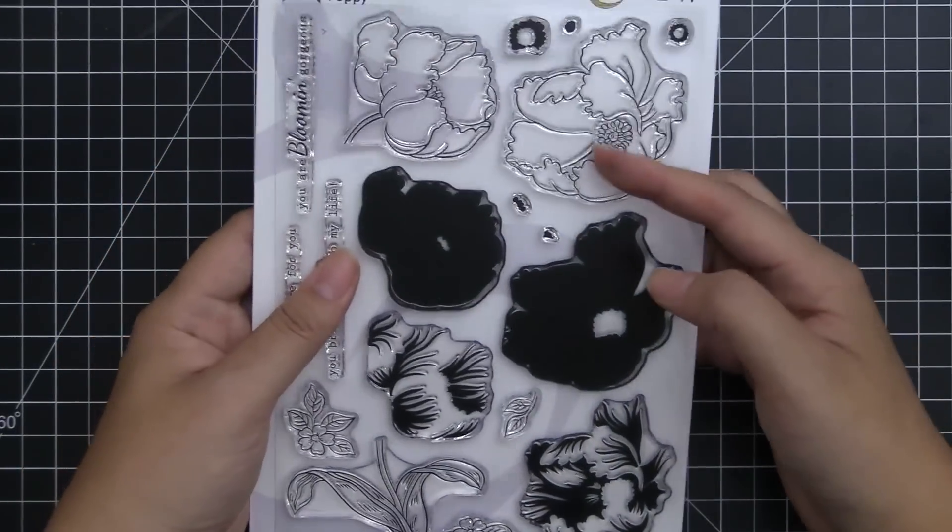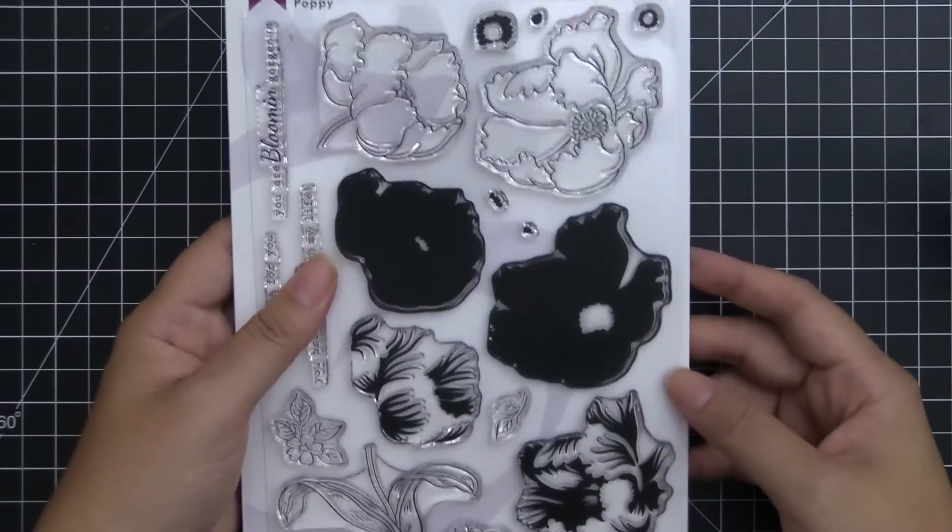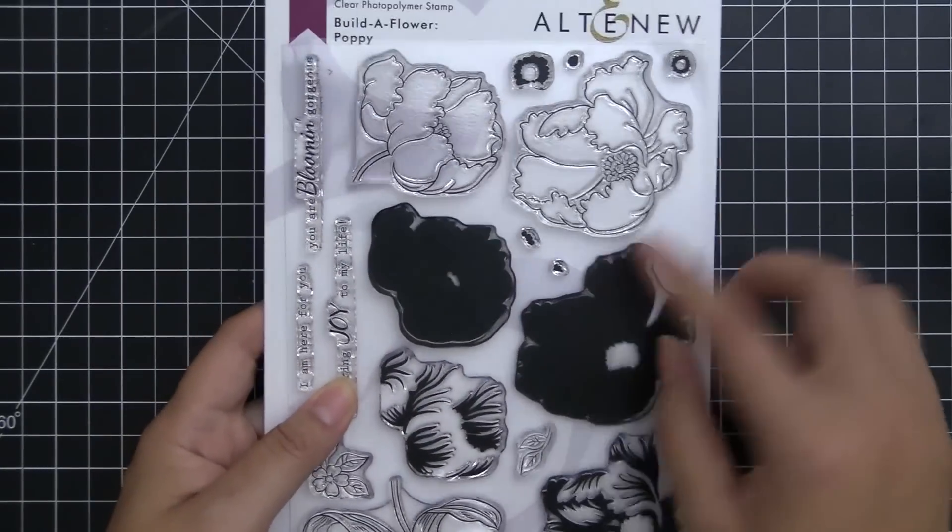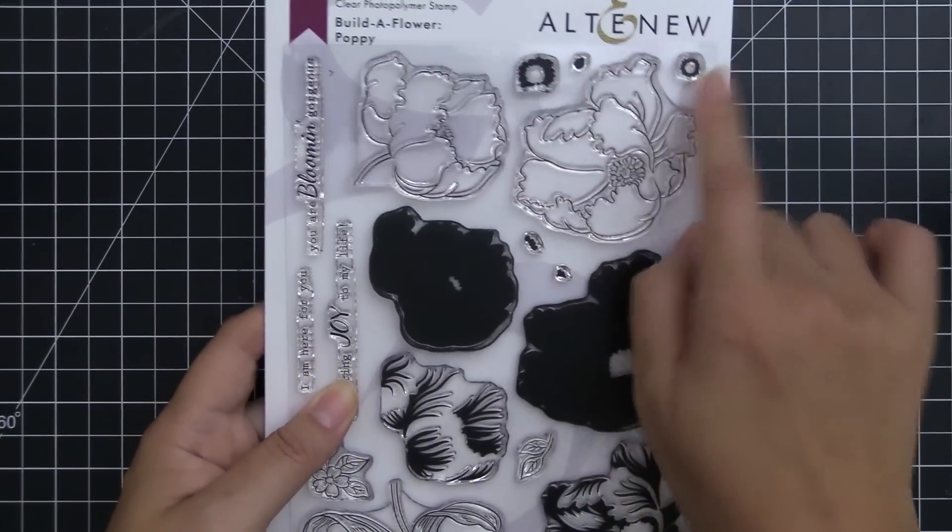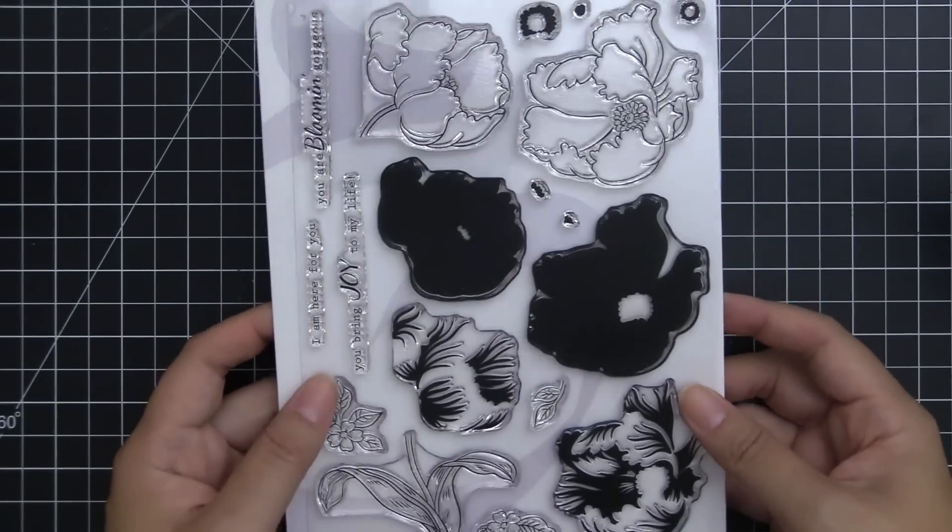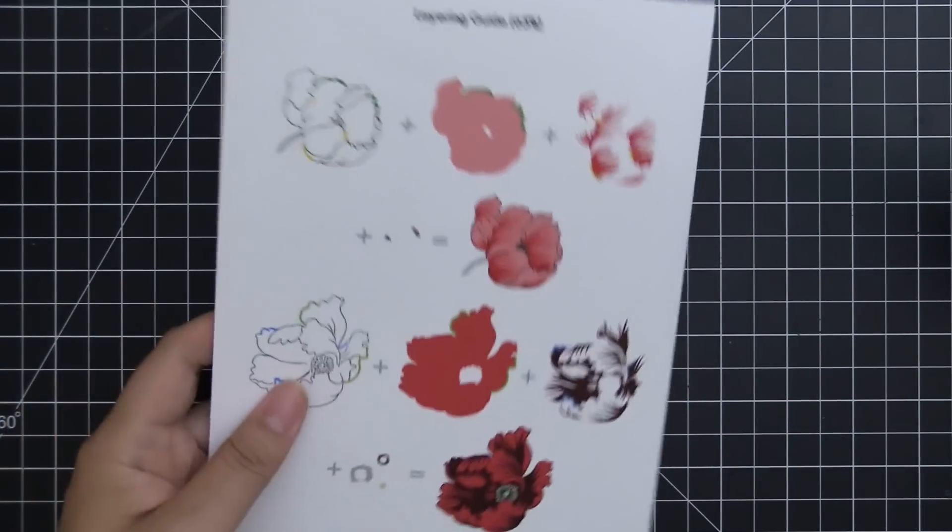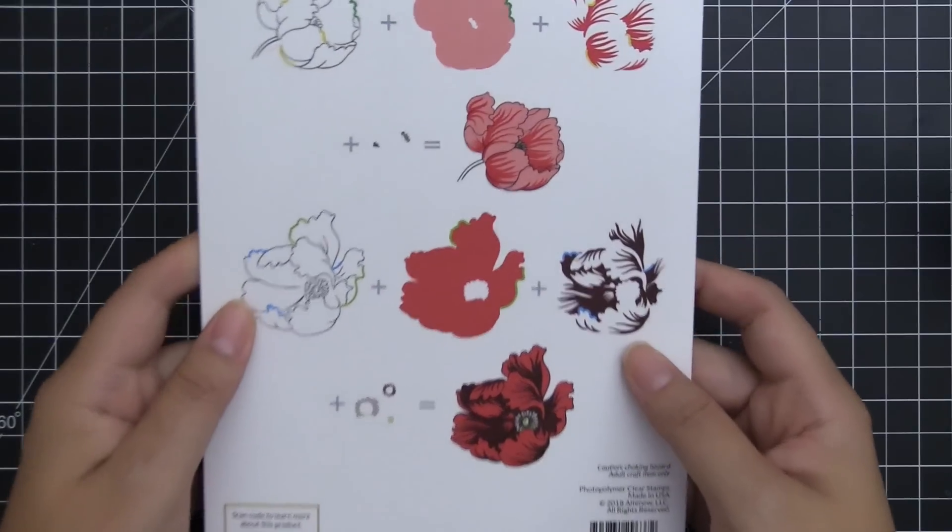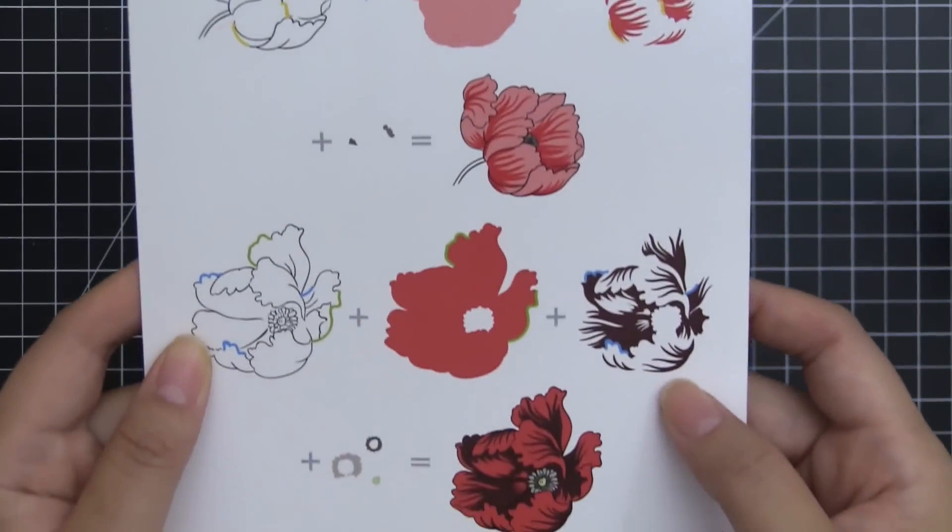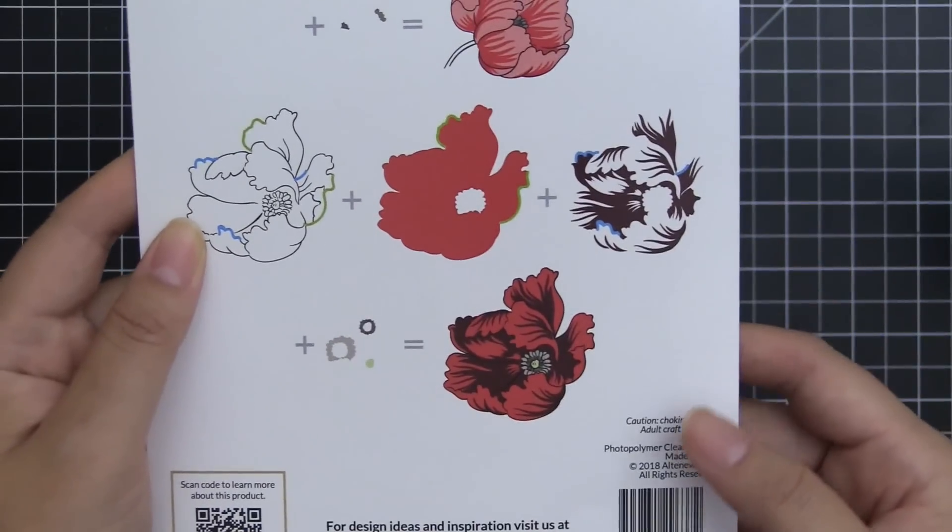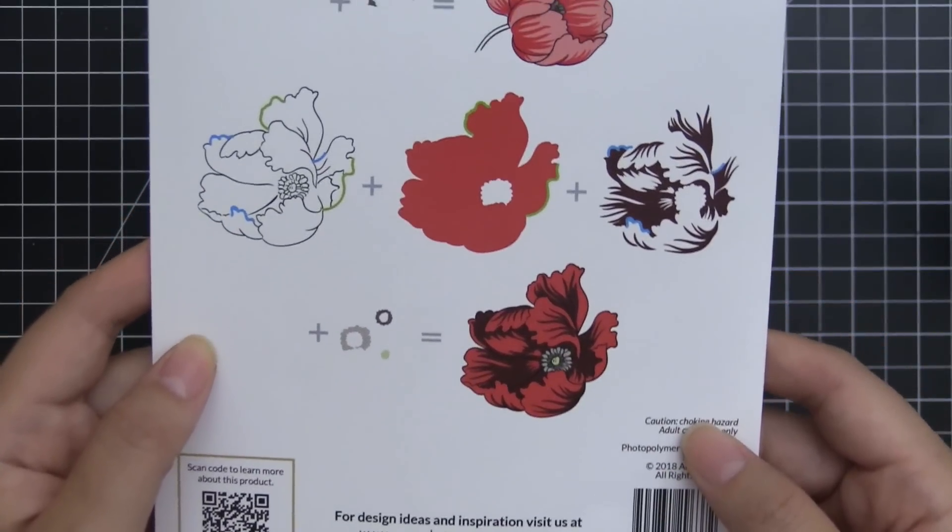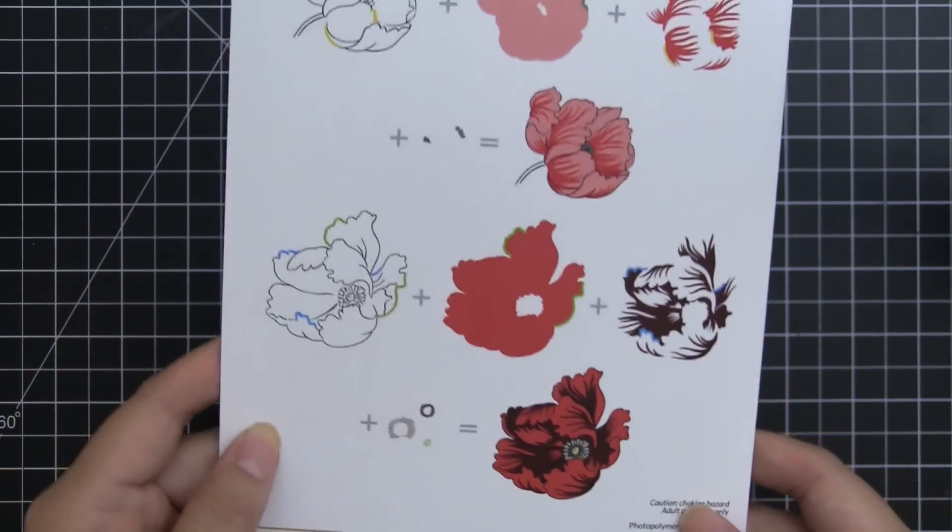This features two large flower poppies and you can layer three different layers on top of each other to create an in-depth look, and there's a center portion of the flower that you can also stamp. Make sure to refer to the layering guide that comes on the back of your packaging when you receive the stamp set. It will give you a matching point that you can reference when you're going through and stamping these images together for your projects.